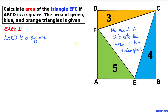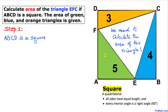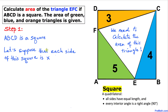Here is our very first step. We know that ABCD is a square and we know that all sides of a square have equal lengths. So let's suppose that each side of this square is x units — this is x, this is x, all the way. Each side is x.